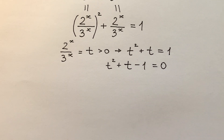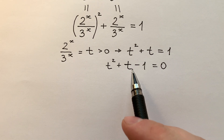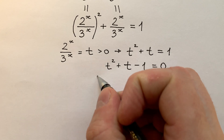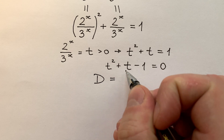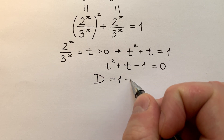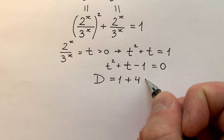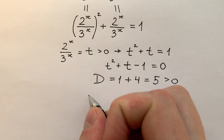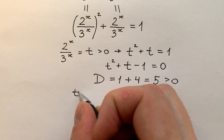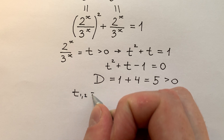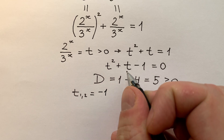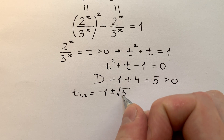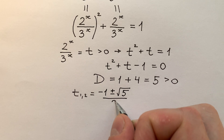Now we're going to solve this equation, knowing that t is bigger than 0. The discriminant of this quadratic equation equals 1 plus 4, which equals 5. Thanks to that it's bigger than 0. And then we find that t equals minus 1 plus or minus the square root of 5, divided by 2.